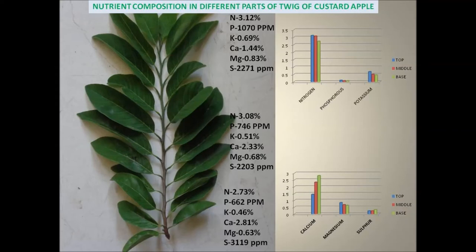Custard Apple starts its new flush in April. Simultaneously, new flower buds and flowers appear on the naked stem. In May, the tree maintains the same stage with little growth due to non-availability of proper moisture. Some flowers shed into fruits but dry at immature stages, becoming black and retained on the stem due to lack of moisture. In June, very little growth is observed in custard apple twigs with 3 to 4 leaves maximum.